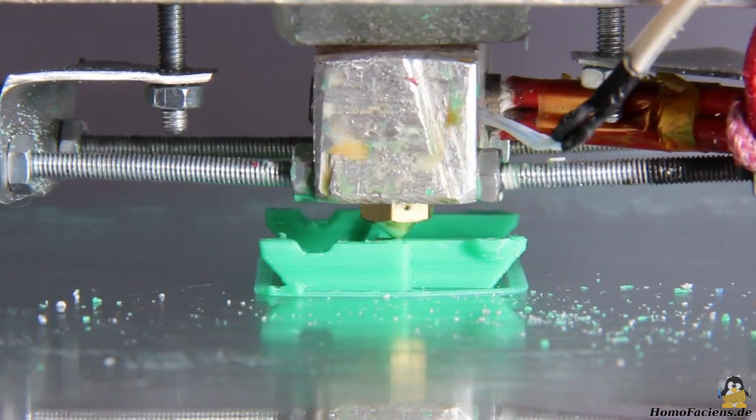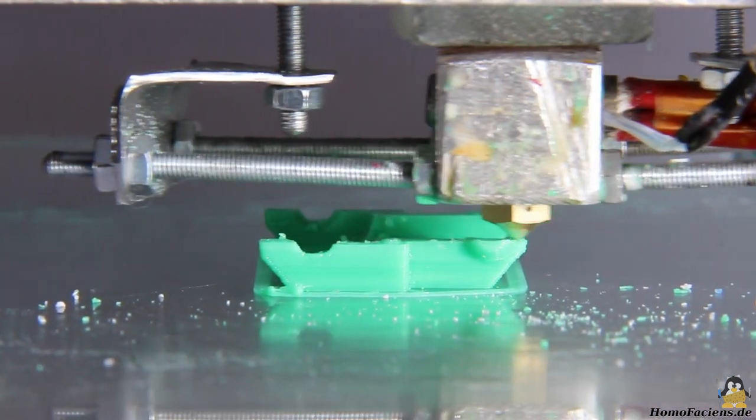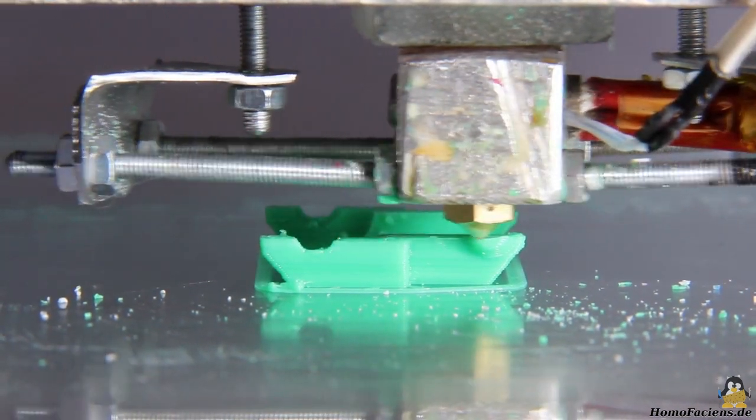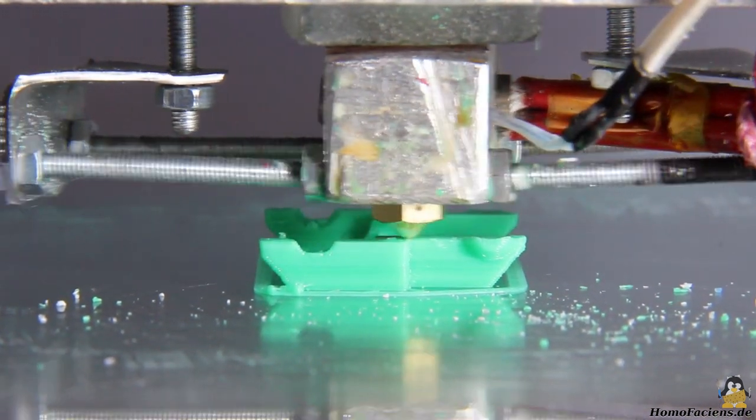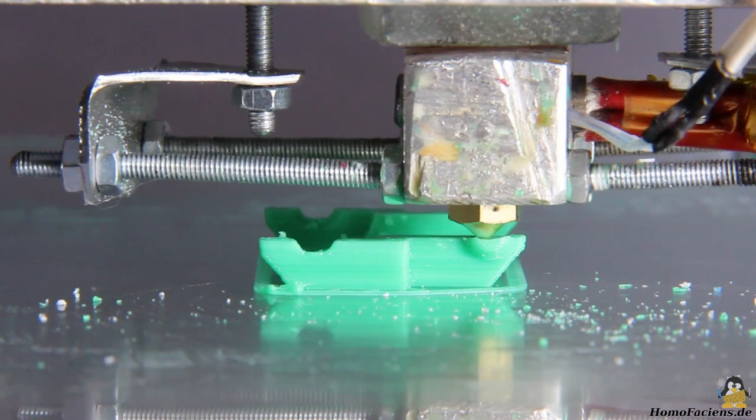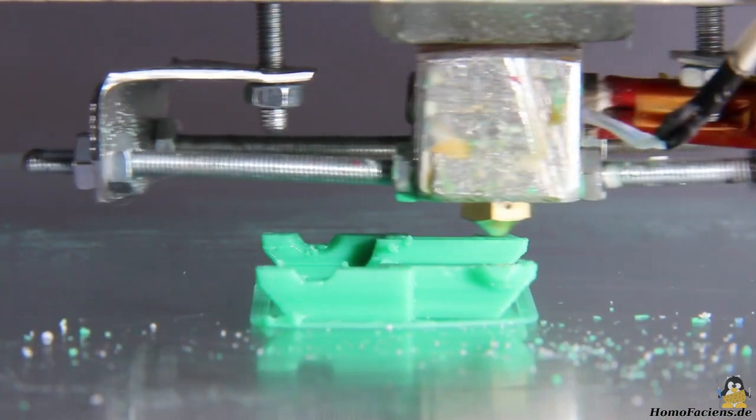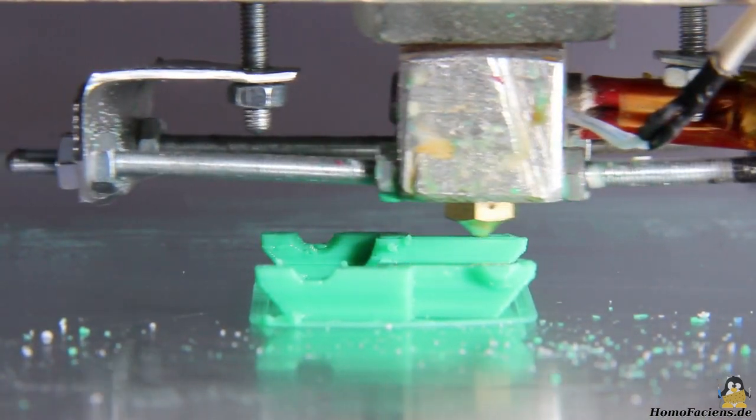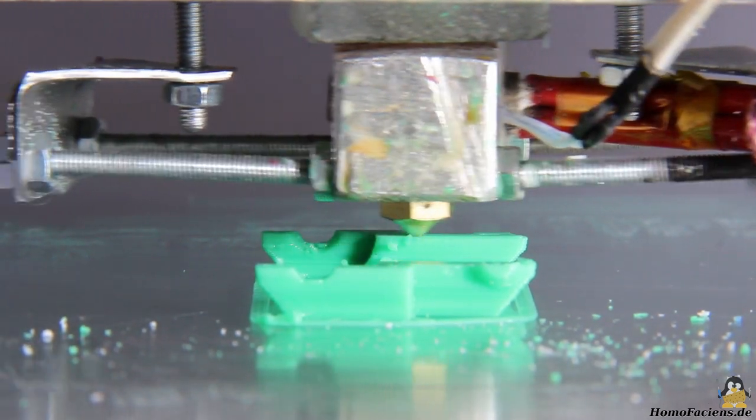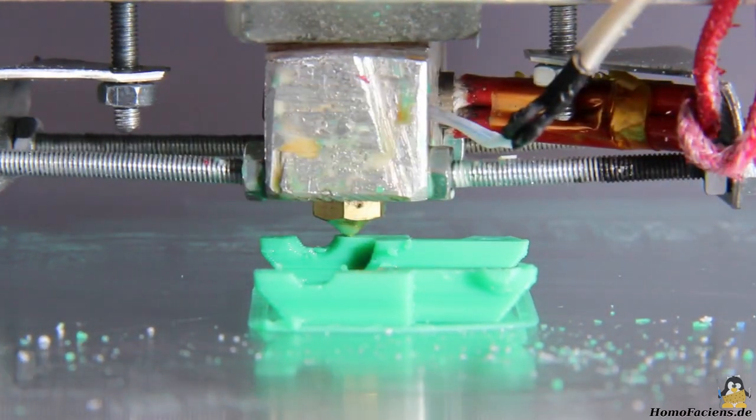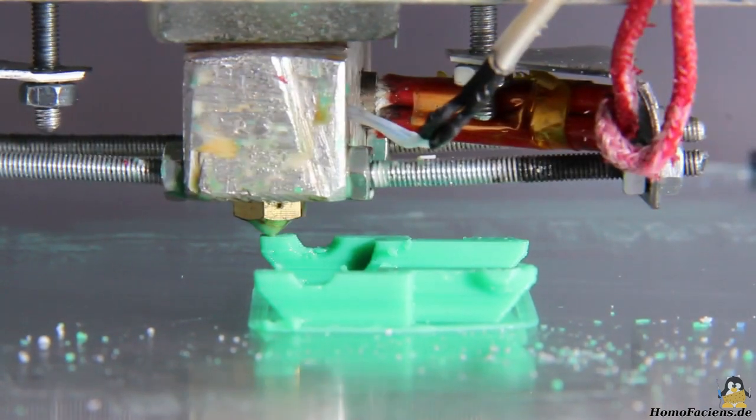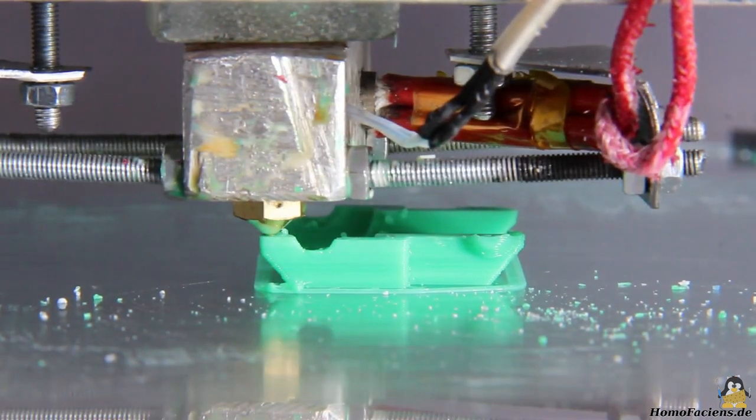The still missing object cooling is particularly noticeable with small structures as can be seen here. Stringing can be clearly seen, I will talk about that in more detail in one of the following videos. In general, the parameters in the slicing software are far from being optimized, it's just a quick print test to show that the extruder can also create small objects.